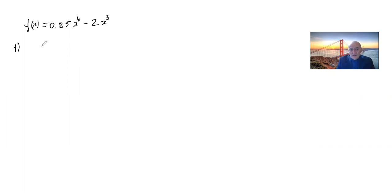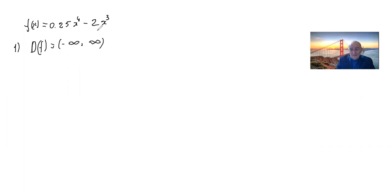We have a polynomial function. For any polynomial function, the domain is all real numbers from negative infinity to infinity. We can also find the y-intercept: when x equals zero, f(0) equals zero.